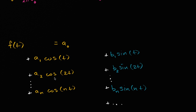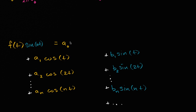How can we do that? We're going to use a very similar technique to what we did to figure out the formula for a sub n. What we're going to do is multiply both sides of this equation by sine of nt. So if we multiply the right-hand side by sine of nt, that means we're going to multiply every one of the infinite terms by sine of nt.